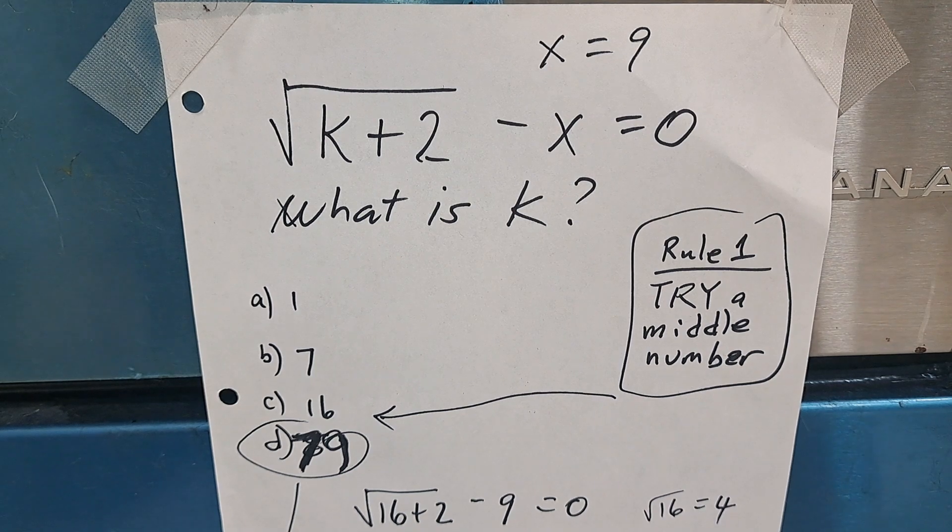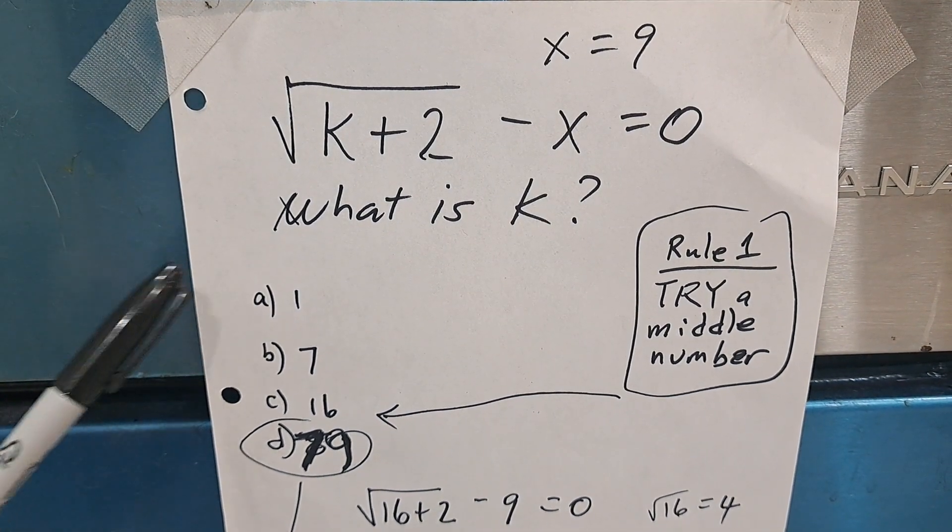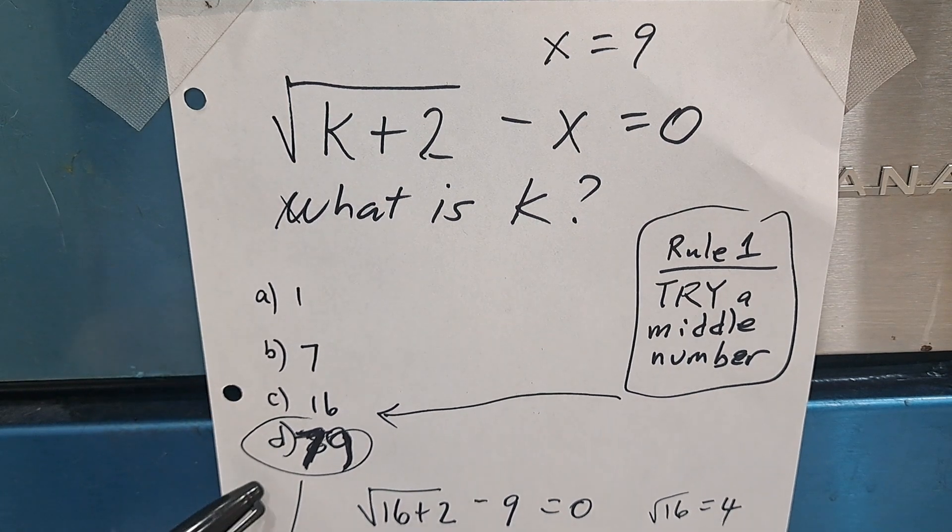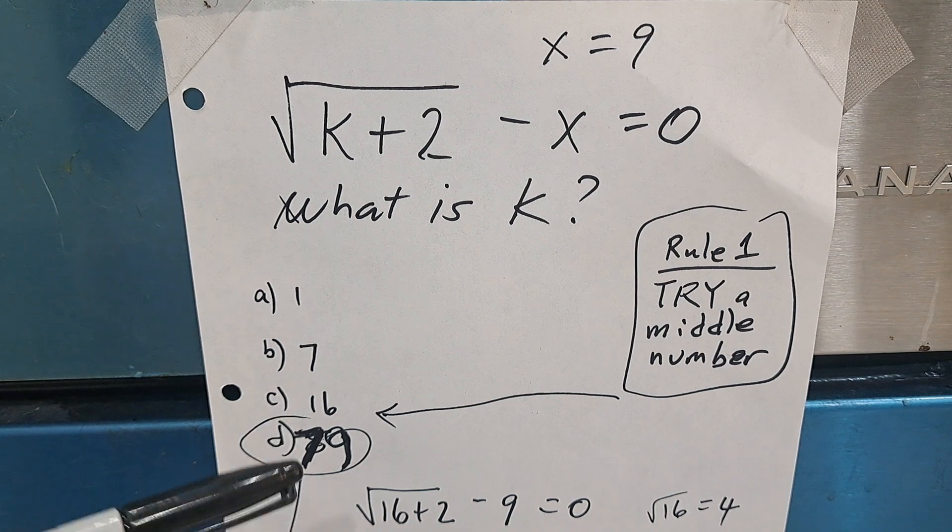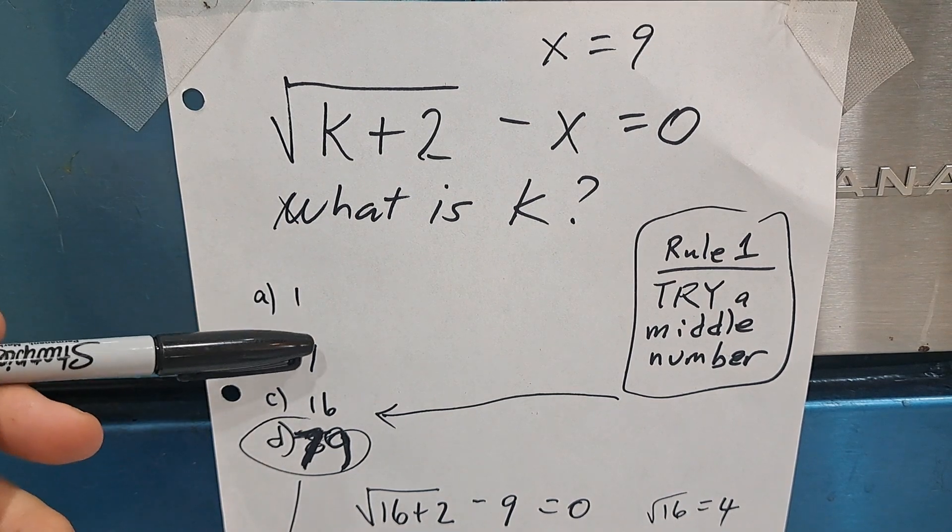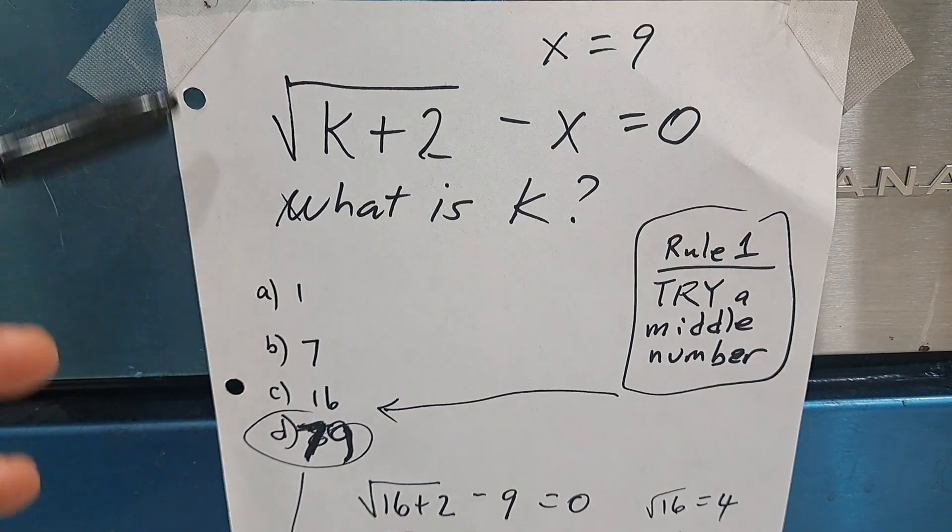Well, one of the first things to do when you see something like this is don't start with the first one or the final one. Choose something in the middle, one of these two. If this is not big enough, you move on to the next. You're saving here.